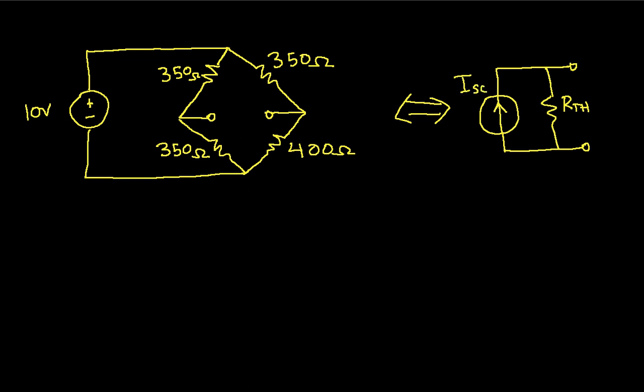So the steps involved in doing this are to find RTH and ISC. We'll find RTH in two ways. The first way is we'll find the open circuit voltage, and then the short circuit current, and then RTH is VOC over ISC.